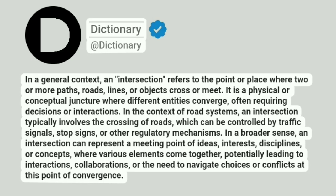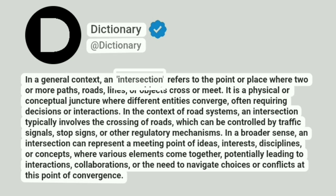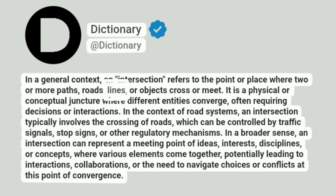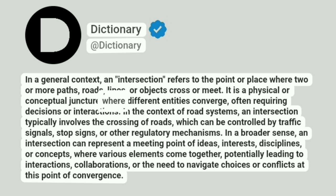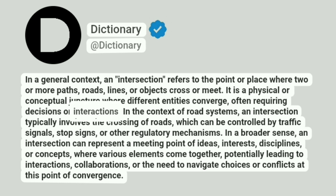Dictionary. At Dictionary. In a general context, an intersection refers to the point or place where two or more paths, roads, lines, or objects cross or meet. It is a physical or conceptual juncture where different entities converge, often requiring decisions or interactions.